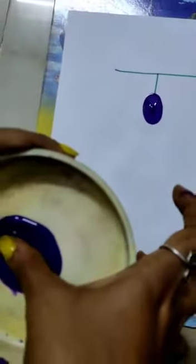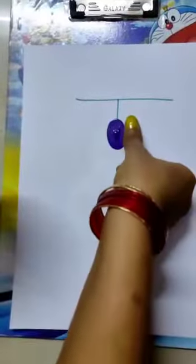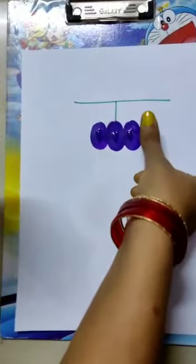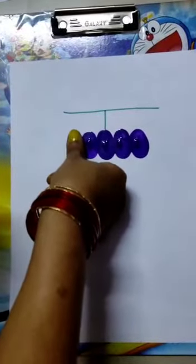Again, one more time - dip it in and place it here. Yes, that's three grapes. Now comes four - dip it and place it here.